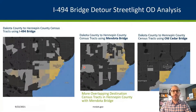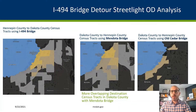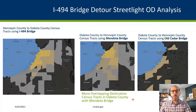Looking at origins in Dakota County to destinations in Hennepin County census tracts using the Streetlight Insight platform, we were able to see where people using the 494 bridge, the Mendota Bridge, and the Old Cedar Road Bridge were traveling. Comparing the three output graphics, we could see that the census tracts highlighted in the 494 bridge travel pattern were very similar to the ones where people were using the Mendota Bridge. Flipping the analysis around to people coming from Hennepin County into Dakota County, again the travel patterns for people using the 494 bridge were similar to the travel patterns for people using the Mendota Bridge.